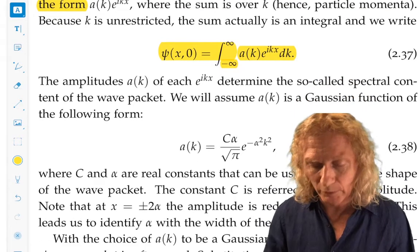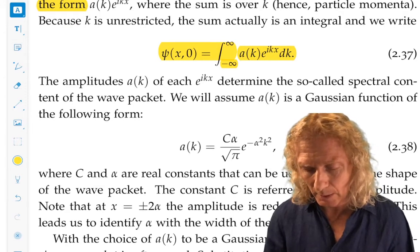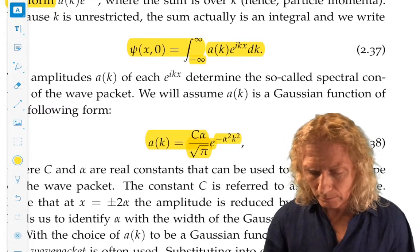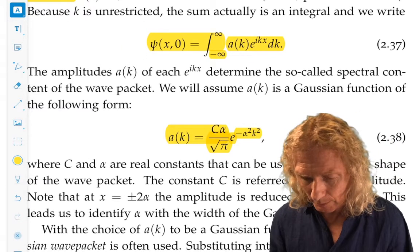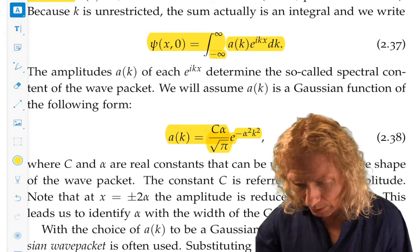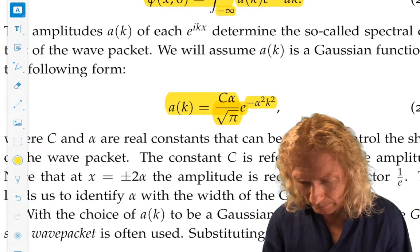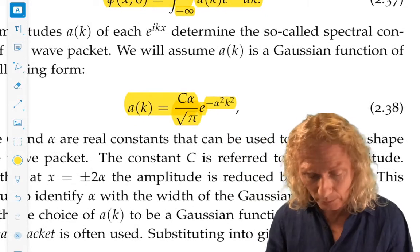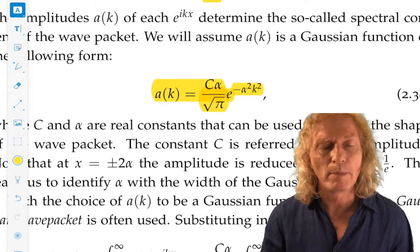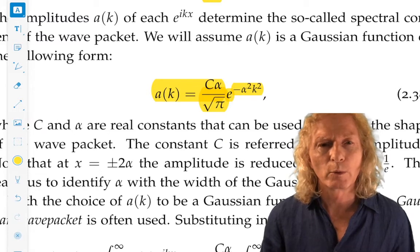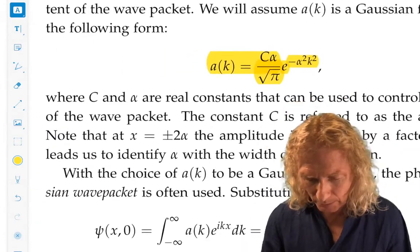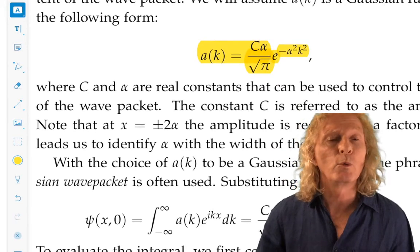We're going to take a superposition of these waves, a packet of these waves, of a specific shape. And that shape we're going to choose is a Gaussian. So there's a number of parameters in here. C is a parameter. Alpha and square root of pi comes along for a reason that I'll explain in a little bit. But the constant C is referred to as the amplitude. And that x equal plus or minus 2 alpha, these are the boundaries on either side for which the wave packet is reduced in amplitude by a factor of 1 over e. And we identified the alpha with what we call the width of the wave packet.